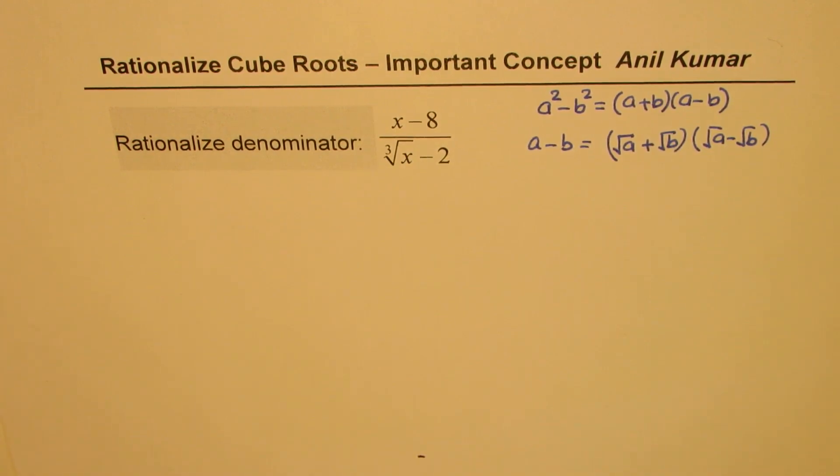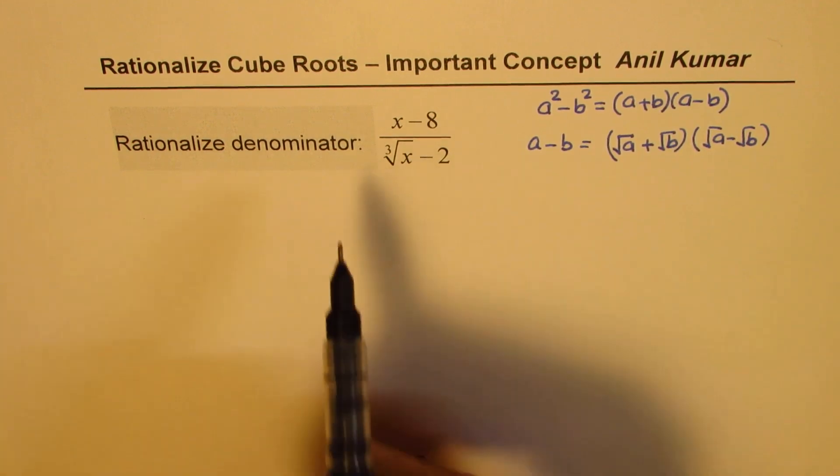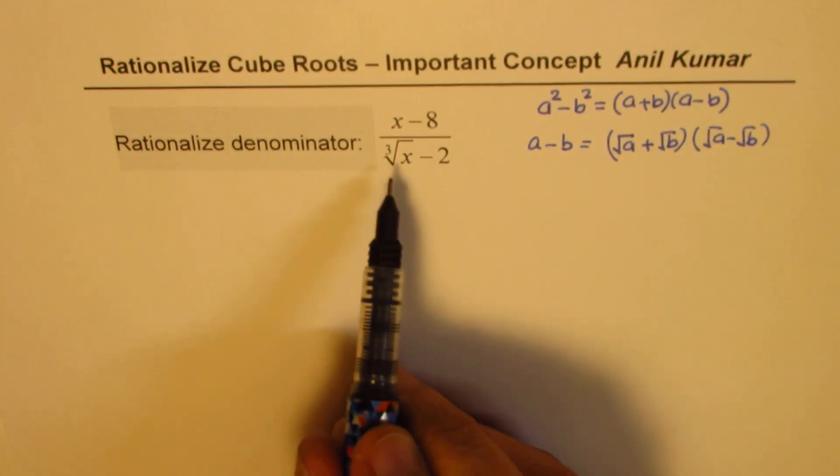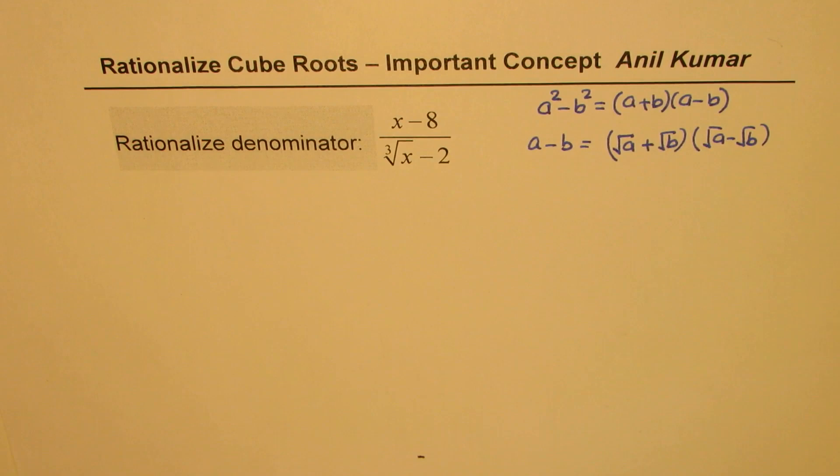Now, to rationalize this, remember the formula for a cube minus b cube, that should be applied. So, let me rewrite big and bold the formula for a cube minus b cube, and then we will see how to rationalize.